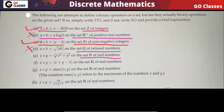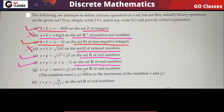On the set of real numbers, can I say a star b equals the square root of x squared plus y squared is a binary operation? Yes, this is a binary operation, because if you take any two real numbers, this result will also be a real number. Similarly, |x + y| minus 1 defined on real numbers is also a binary operation. And x star y equal to max(x, y) on real numbers is also a binary operation, since the maximum of two real numbers is also a real number.